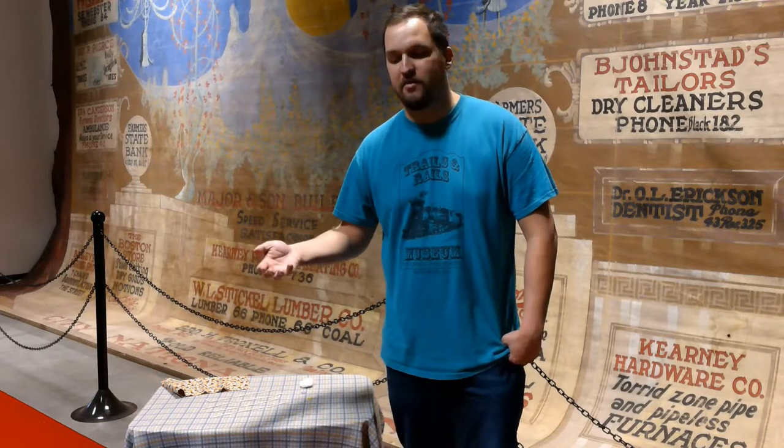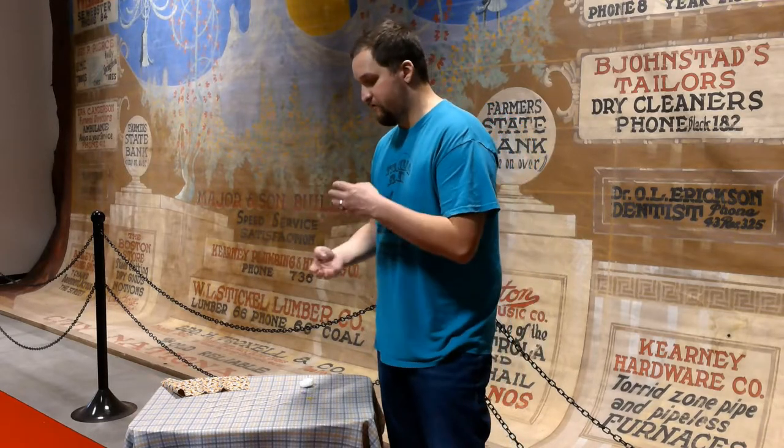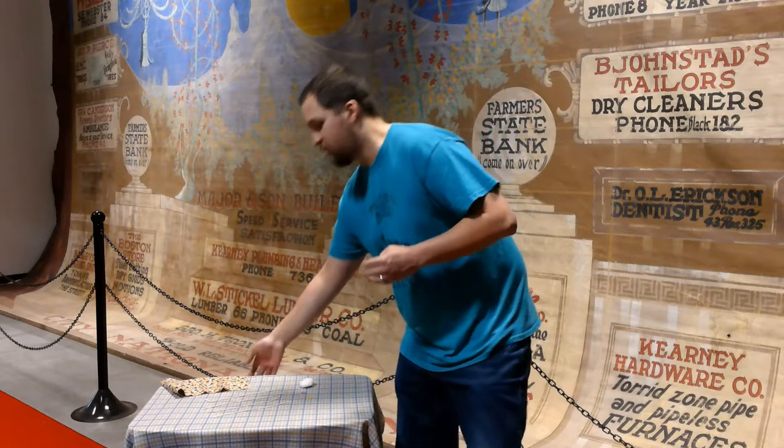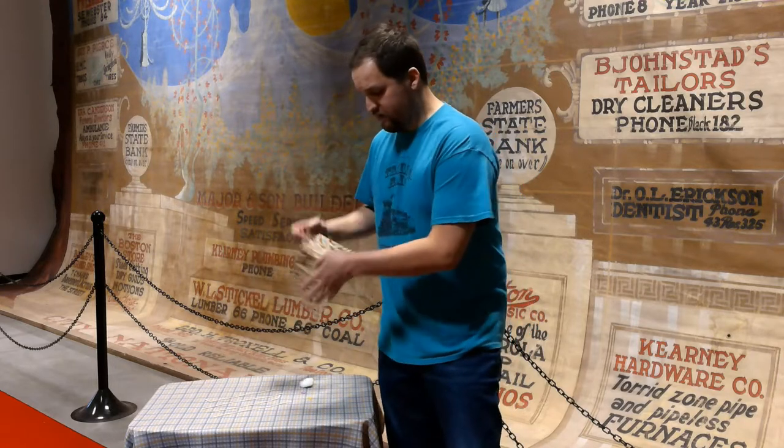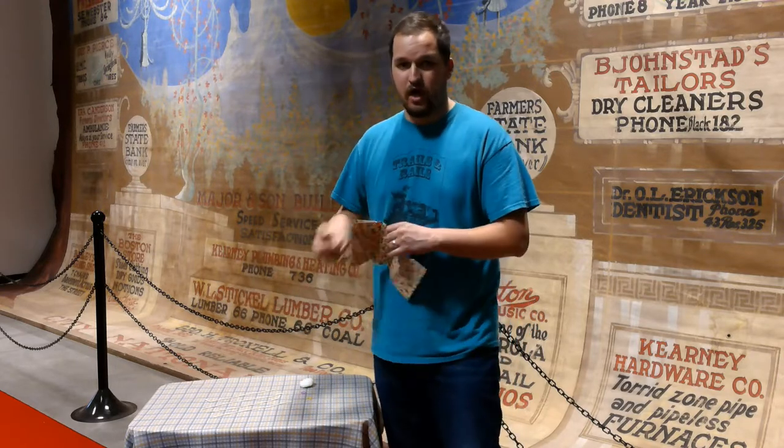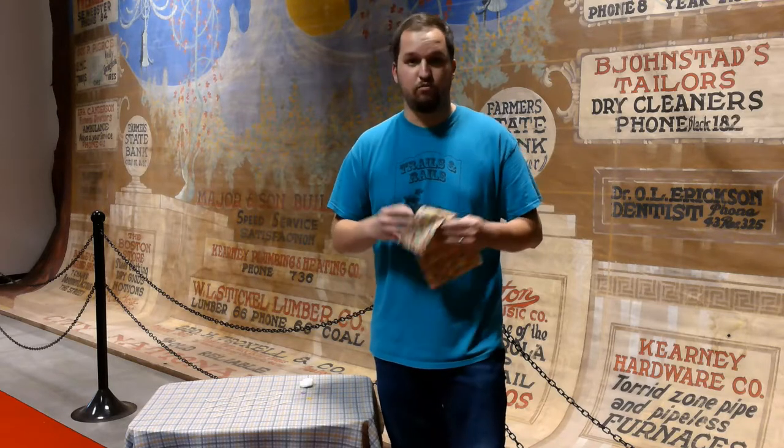Hi, this is Brock Anderson at your Trails and Rails Museum, and today we're going to learn how to make a handkerchief doll out of four pieces of string, a piece of cloth material, a couple of rubber bands, and a cotton ball. So with all of that, you can have your own pioneer toy and have a great time with it.